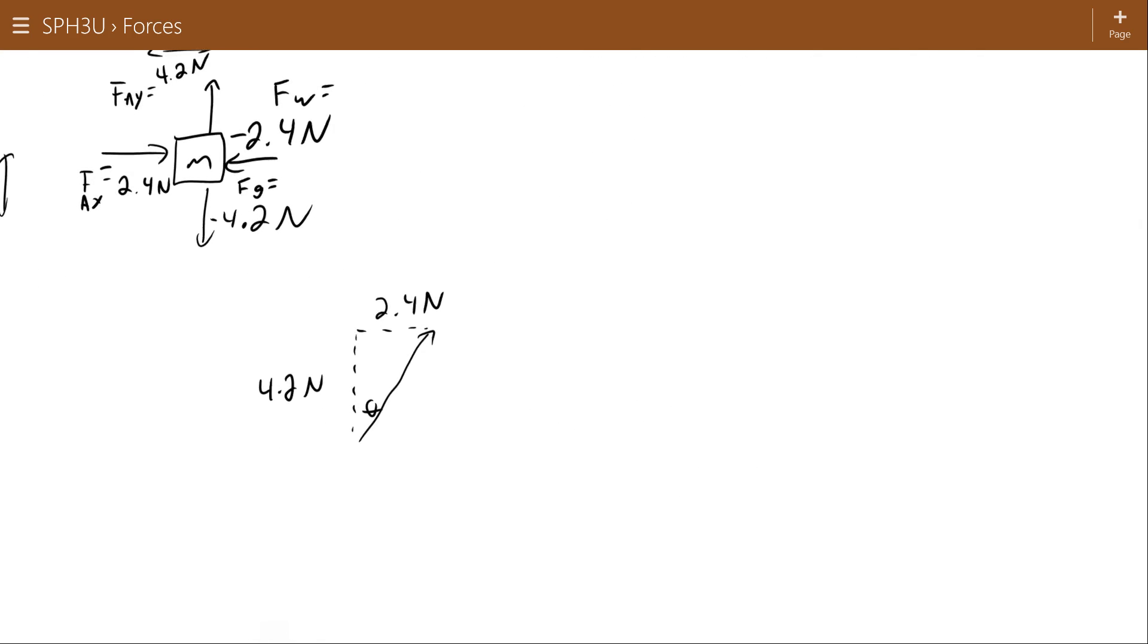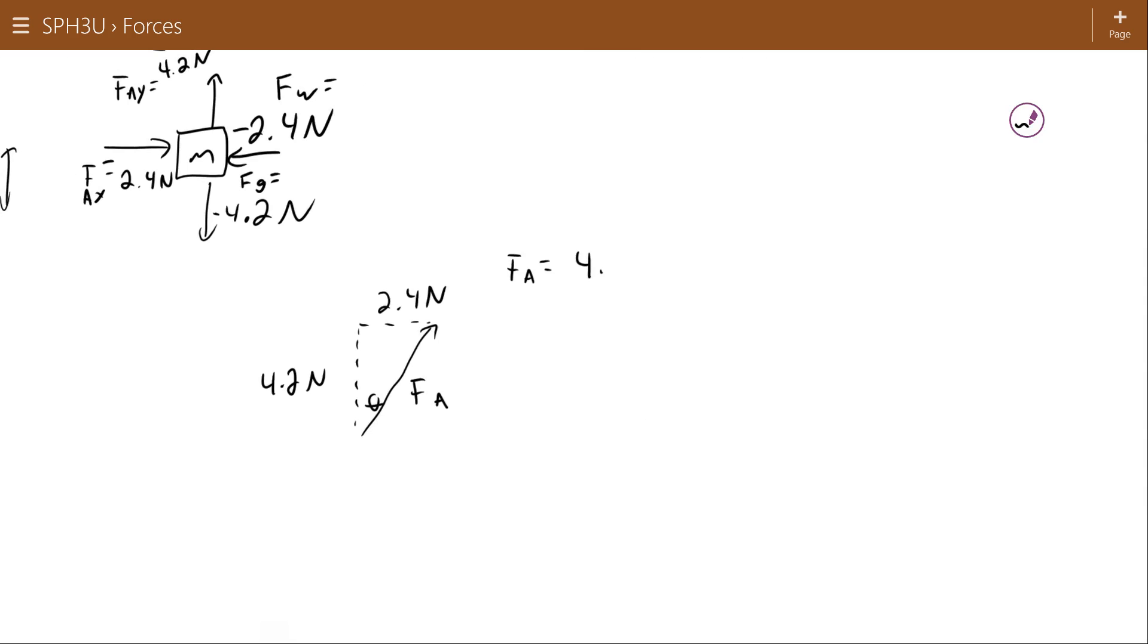So using the Pythagorean theorem, the side here, Fa, the size of it, is going to be the square root of 4.2 Newtons squared plus 2.4 Newtons squared, which works out to 4.84 Newtons, ignoring significant digits and that stuff. With this angle here, tan theta is equal to 2.4 Newtons divided by 4.8 Newtons. Theta then is going to be equal to tan inverse of 0.5, which is 26.6 degrees.